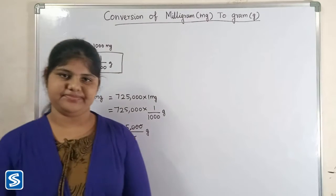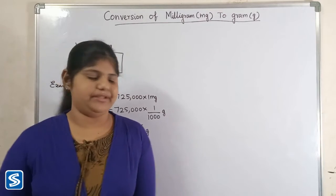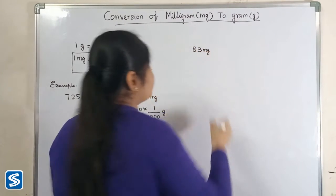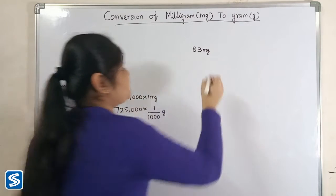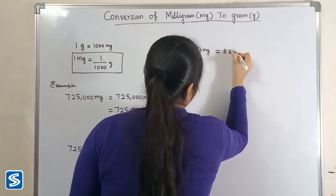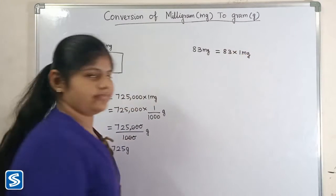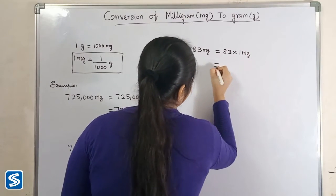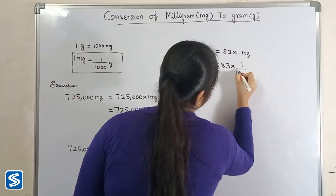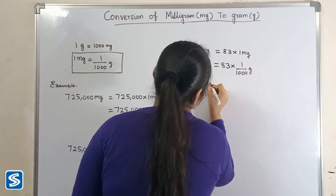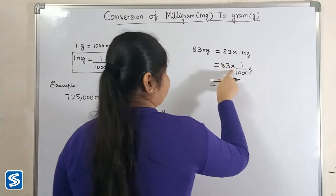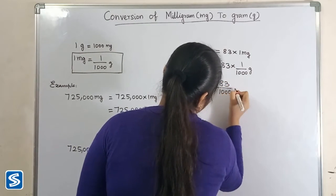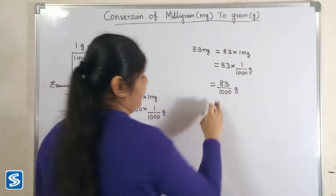Next we will take another example: 83 milligrams. 83 milligrams can be written as 83 multiply one milligram. Now we have to substitute one by thousand grams in the place of one milligram, so 83 multiplied by one by thousand grams.